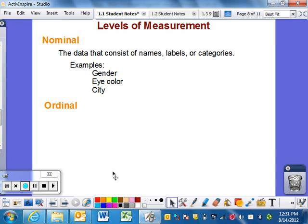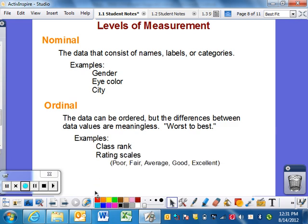Ordinal data can be ordered, but the differences between data values are meaningless. Think of worst to best - class rank first, second, third, fourth. You're ordering them, but the difference between one and two might be nothing or minuscule. We cannot use math between them. Class rank, rating scales like poor, fair, average, good, excellent, or agree/disagree scales are all ordinal.